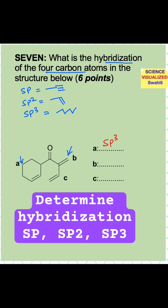B, if you look at this carbon number B, has a double bond, and therefore that will be an SP2 carbon.